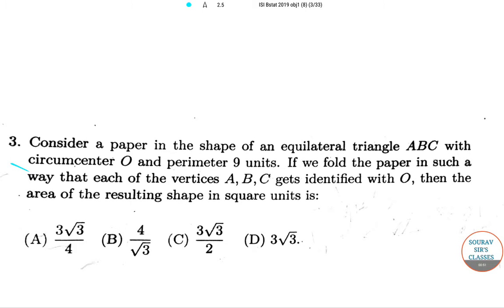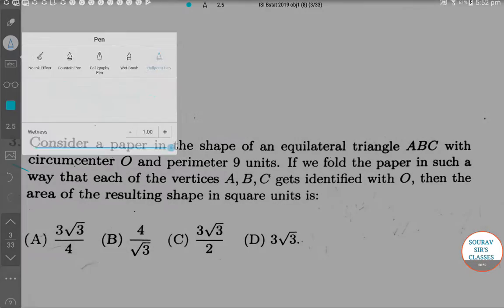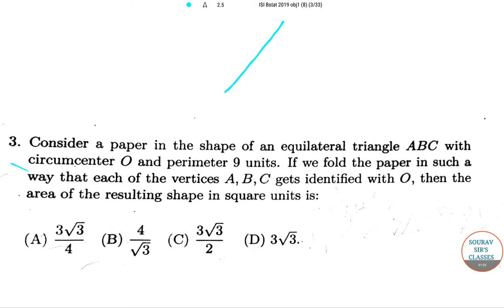Now, here we are taking the paper with equilateral triangle ABC. First, the circumcenter is O, and we are folding the paper in such a way that A comes to O, B will also come to O, and C will also come to O.